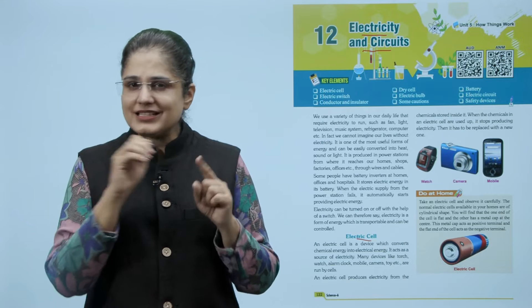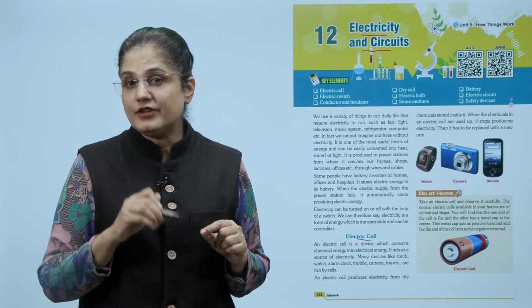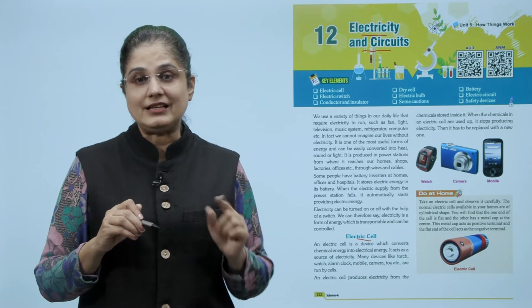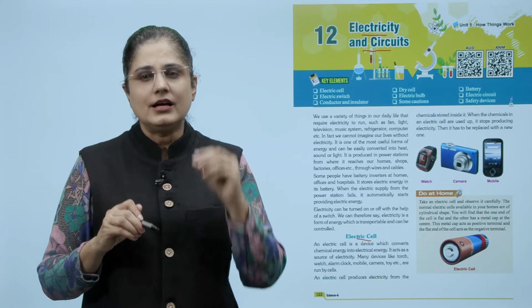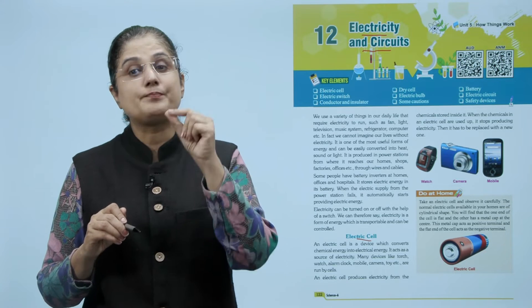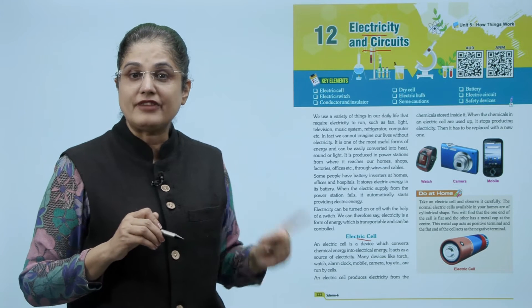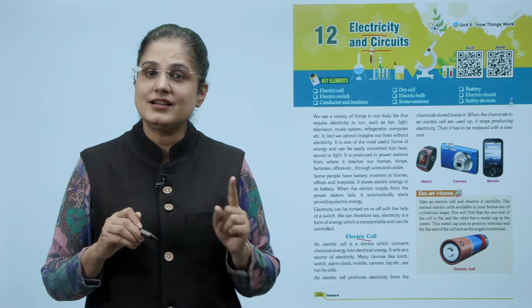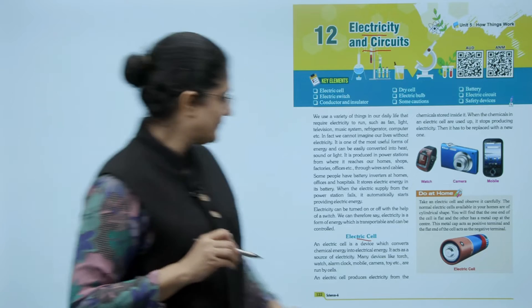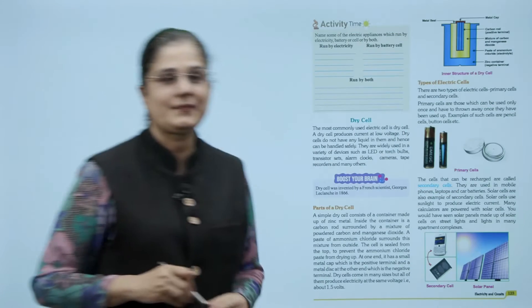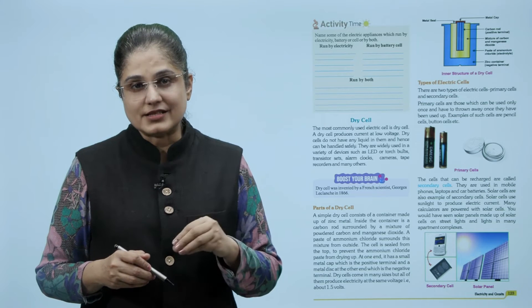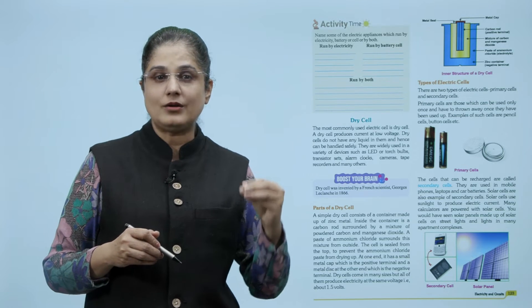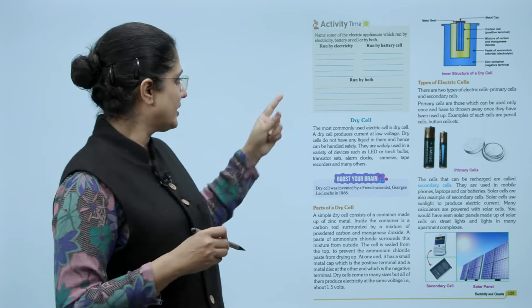Now take an electric cell and observe it carefully. The normal electric cells available in your homes are of cylindrical shape. You will find that one end of the cell is flat and the other has a metal cap at the center. This metal cap acts as positive terminal and the flat end of the cell acts as the negative terminal.